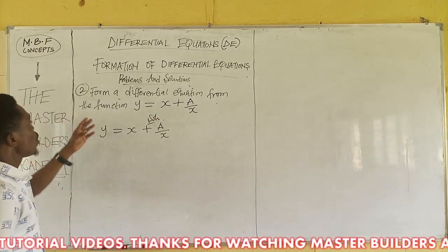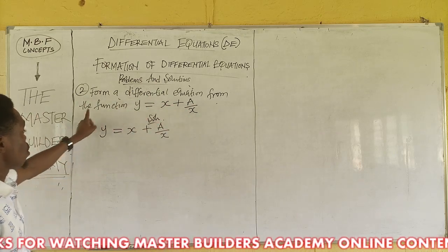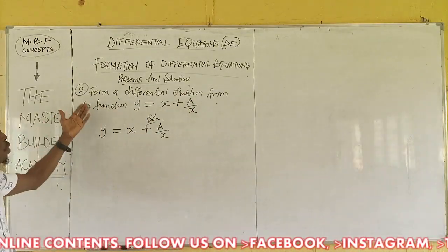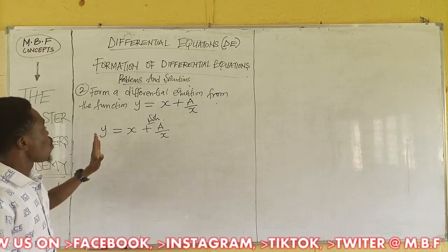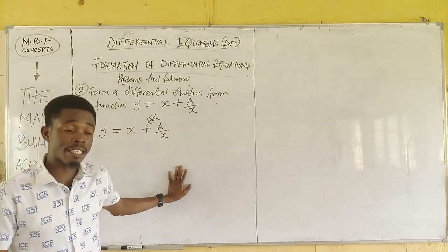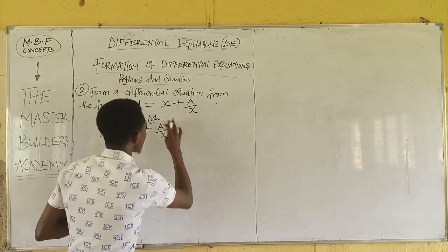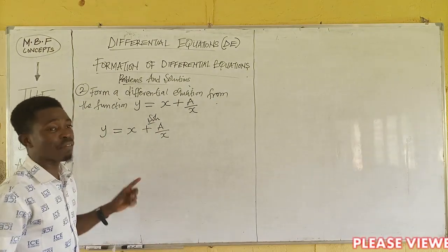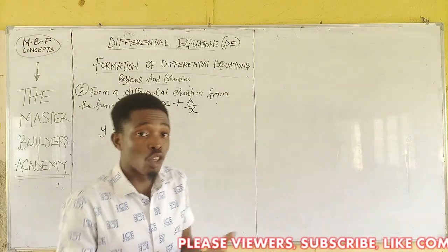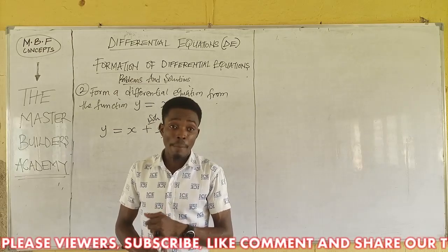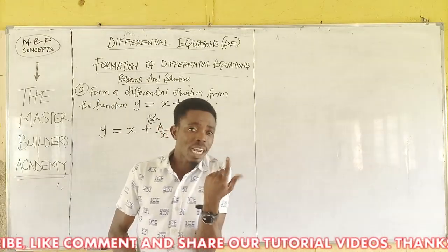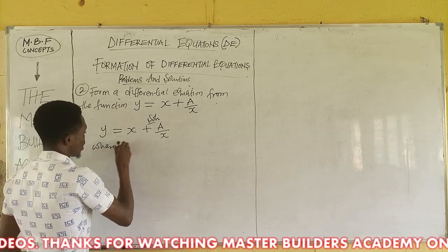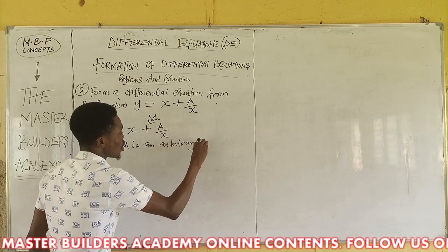At this point, we are asked to form a differential equation from the function y = (x + a)/x. This happens to be equation 2. In this function we have three variables: x, y, and a. We already know the arbitrary constant here, which is a. We have just one arbitrary constant.